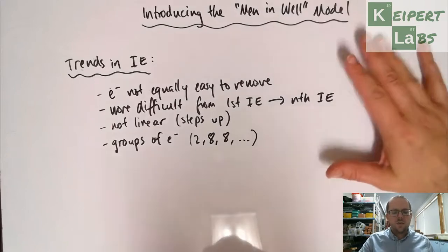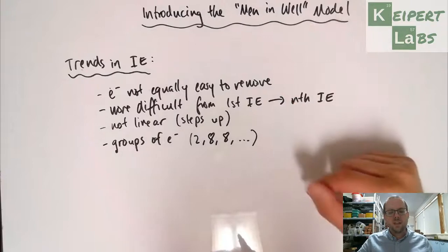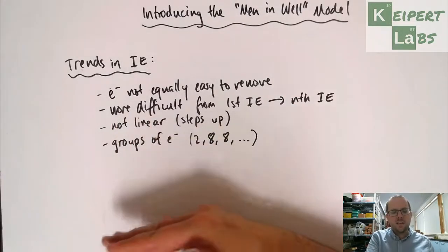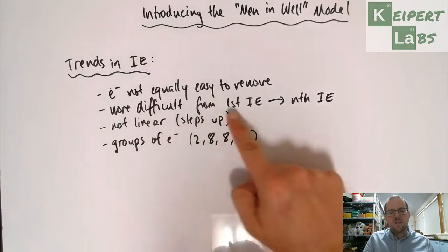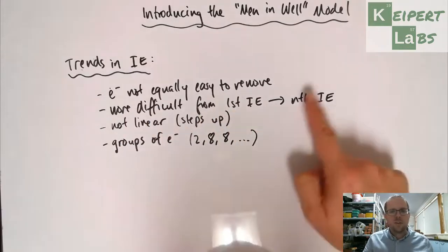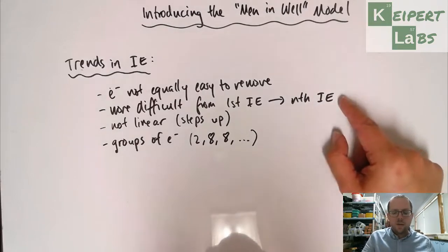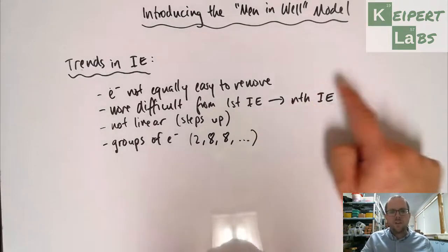The first thing that we notice is that the electrons are not equally easy to remove, that it does get more difficult or more energy is needed from the first ionization energy all the way up to however many electrons we've got to remove, whether it's 2 or 10 or 20. By the time we get to the end, these ones are incredibly hard to remove.